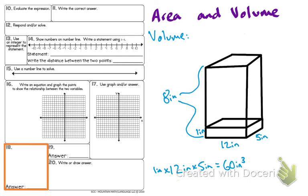we would have eight layers of 60 cubic inches, and so that would be 60 cubic inches times 8 inches would equal 480 cubic inches.